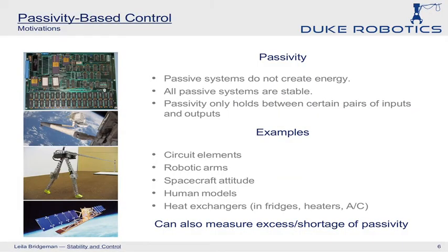There are many systems that can be shown to be naturally passive — for instance, all of the basic circuit elements, robotic arms, spacecraft attitude manipulation, and certain models of human behavior show that the human is actually a passive element in your system. This means I could design a controller for a robotic arm and it will actually be guaranteed to stabilize a spacecraft whose attitude we're trying to adjust. It won't necessarily get good performance, but it won't make things go catastrophically wrong — so that's a huge amount of robustness and an incredibly powerful tool.